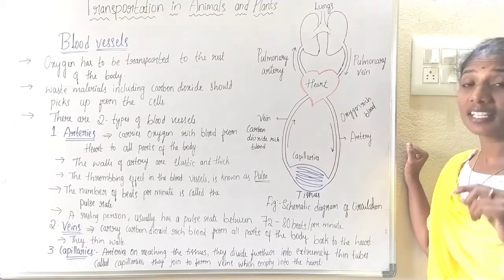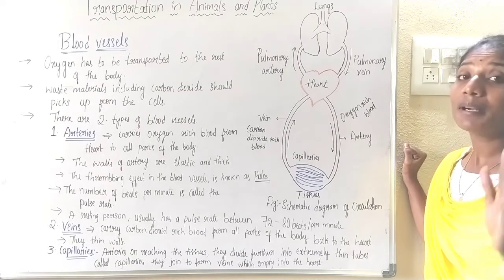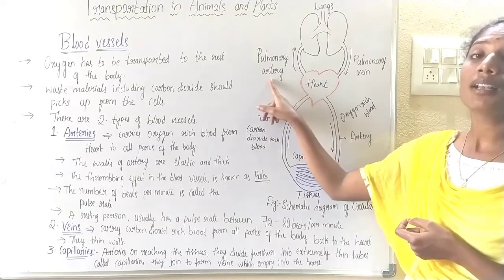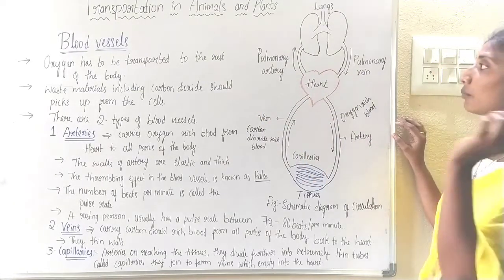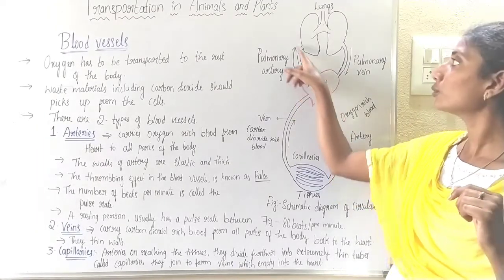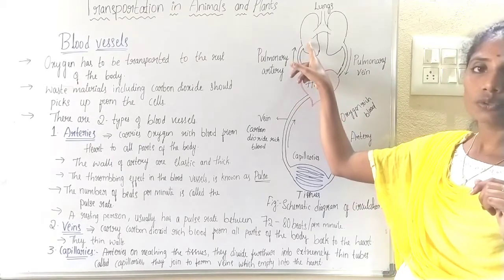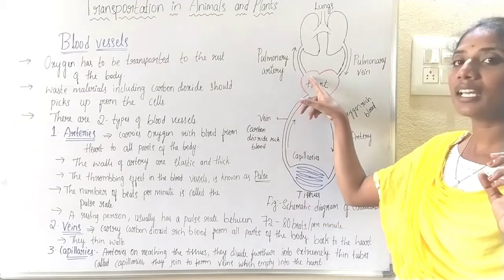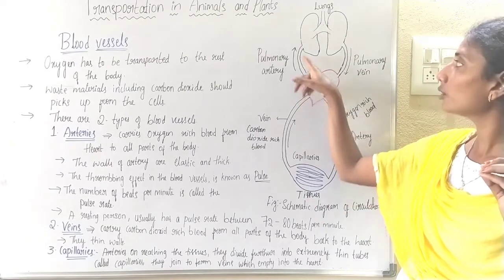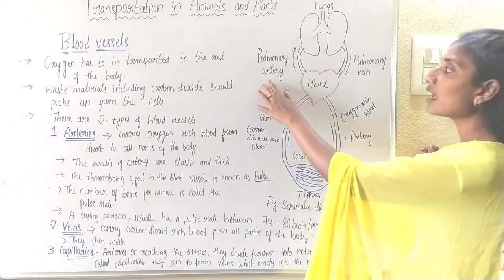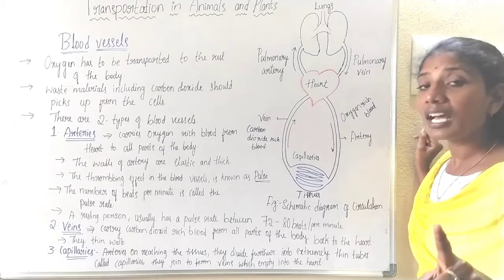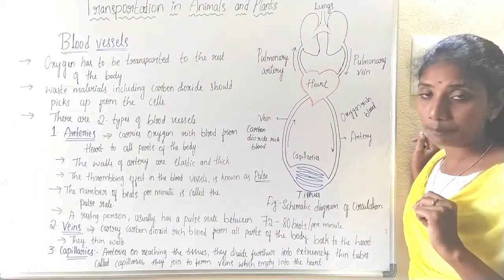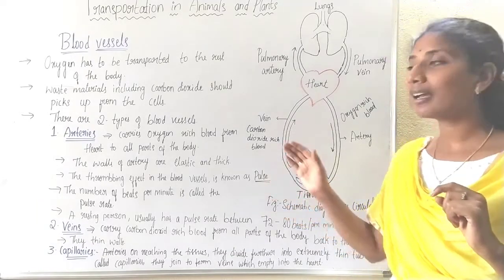However, there is one special type of artery in our body which carries carbon dioxide-rich blood - that is the pulmonary artery. The pulmonary artery is connected from the heart to the lungs. The blood which is rich in carbon dioxide comes from the tissues, moves from the heart to the lungs via this blood vessel. The pulmonary artery is the only blood vessel in our body which carries carbon dioxide-rich blood.